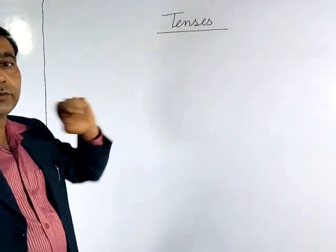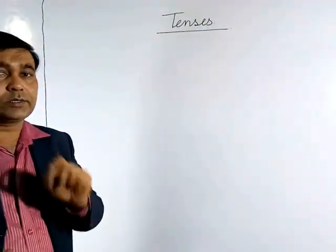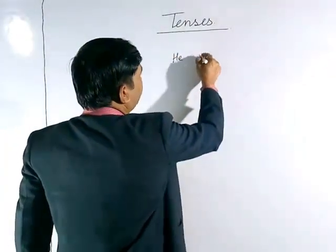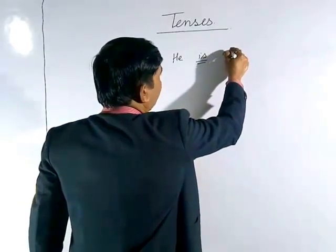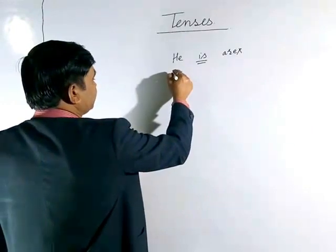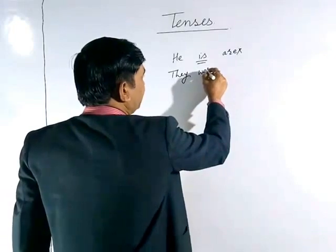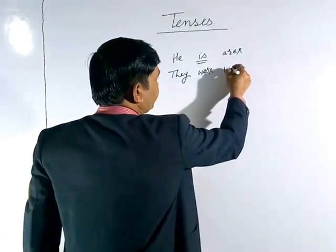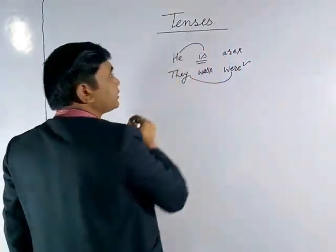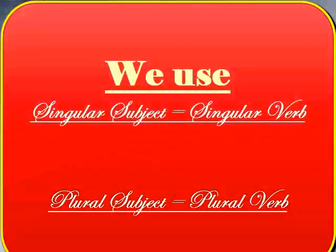One more thing: with singular subjects we always use singular verb forms. For example, with 'he' we use 'is', never 'are'. With 'they' we use plural forms. We use a verb that is correct according to whether the subject is singular or plural — singular verb with singular subjects.